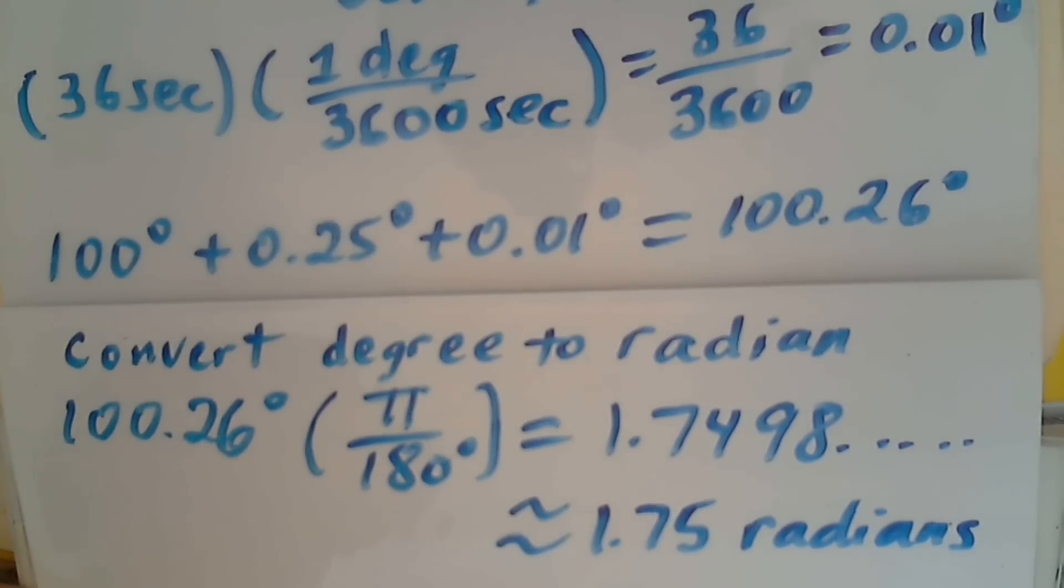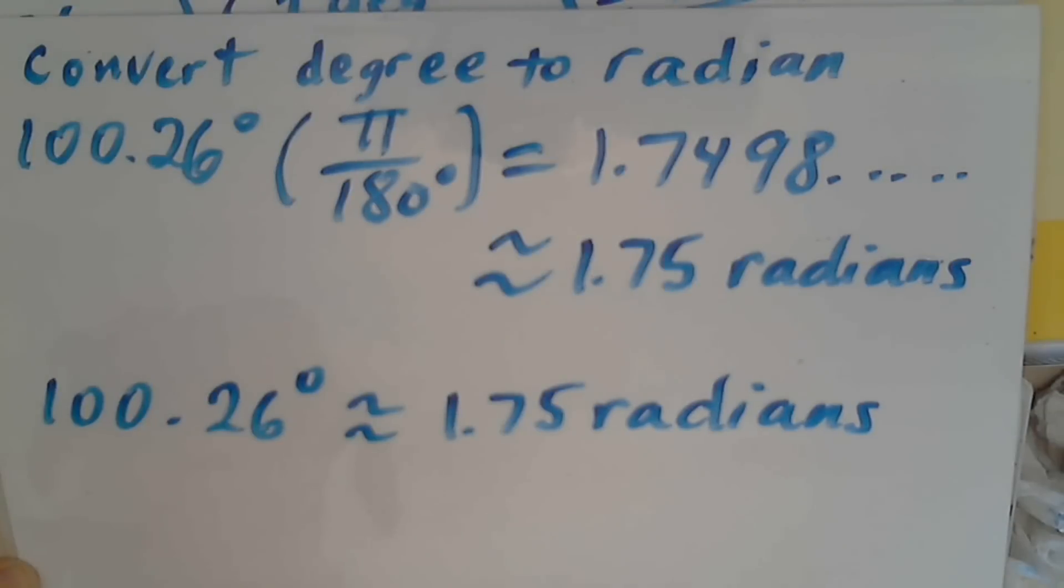Therefore, 100.26 degrees equals approximately 1.75 radians. Thank you for watching my video.